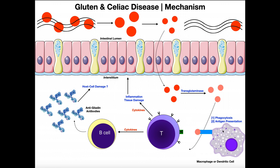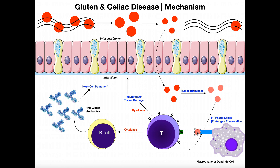Here's a macrophage that has already taken up one of these gliadin peptides, phagocytized it — meaning it broke it down enzymatically — but saved a little piece and is now displaying it on a cell surface receptor. This indicates to other cells, like this T cell over here, that here is a foreign particle we don't want and should mount an immune response against. That's the gist of antigen presentation.